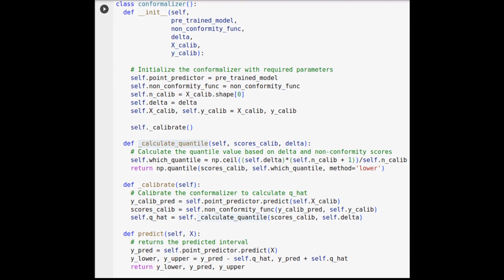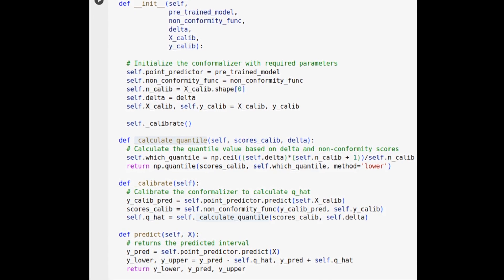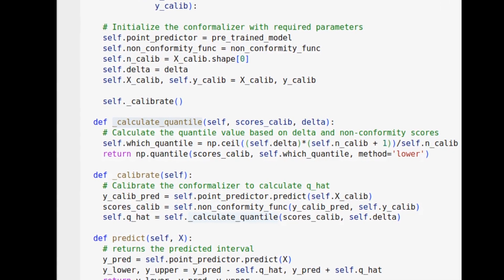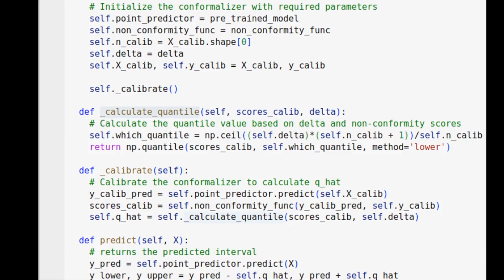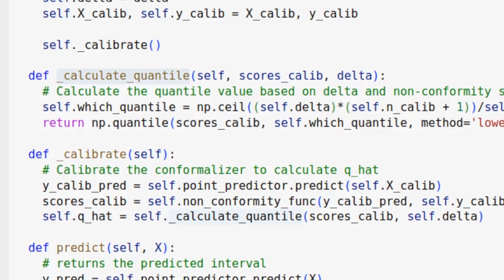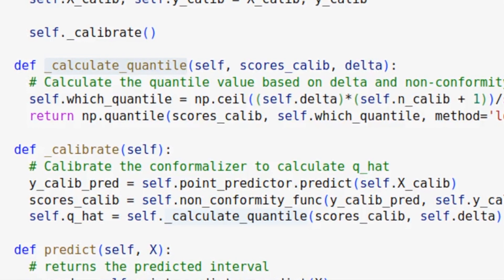You might wonder how is that quantile calculated. It's a crucial step. We start by making point predictions on the calibration set, then calculate their non-conformities, and finally use the numpy.quantile function to determine the desired quantile value q hat.